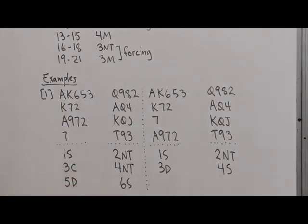Five diamonds shows three key cards here. We've got the ace and king of trump and a side suit ace. And so knowing that, partner goes to six spades, and we have a good play for that contract. It looks like we're only going to lose one club. We've got five spades, three hearts is eight, four diamonds is 12, making six.